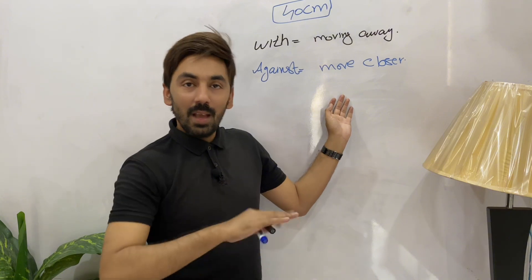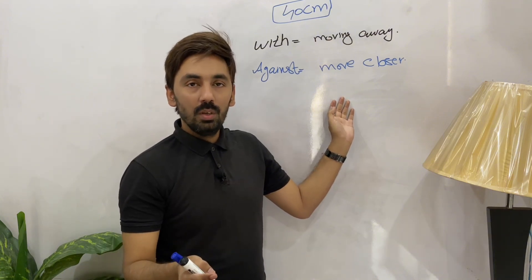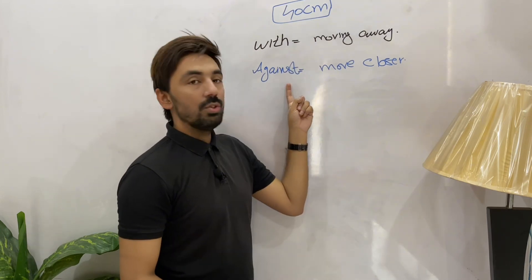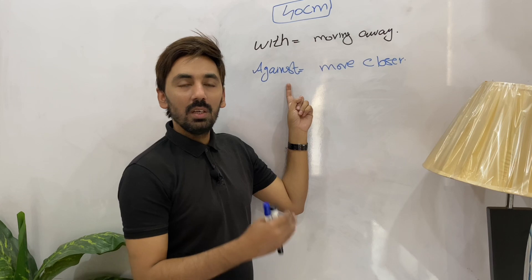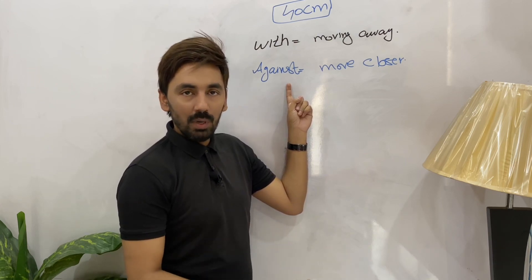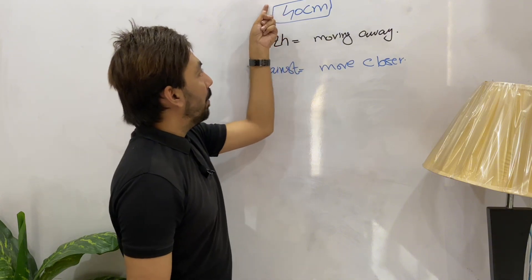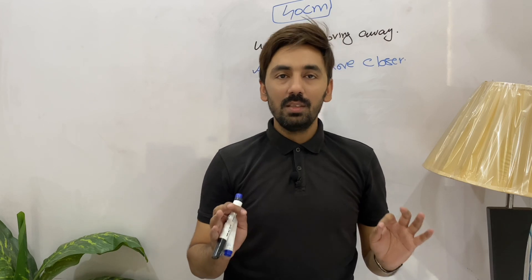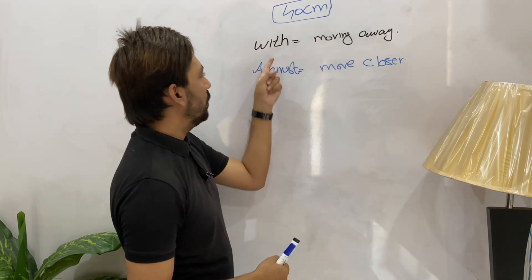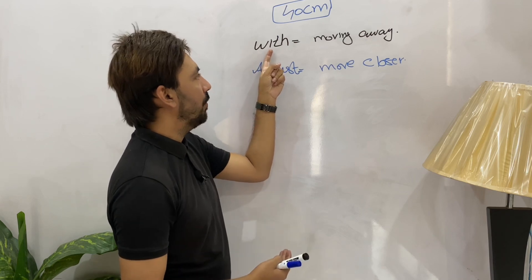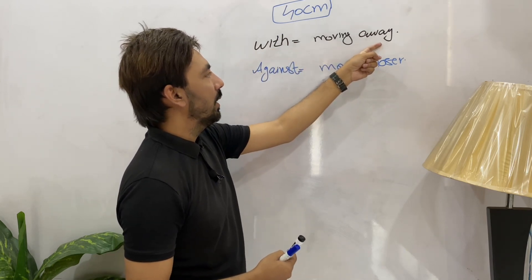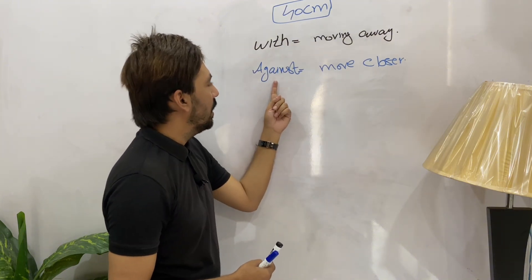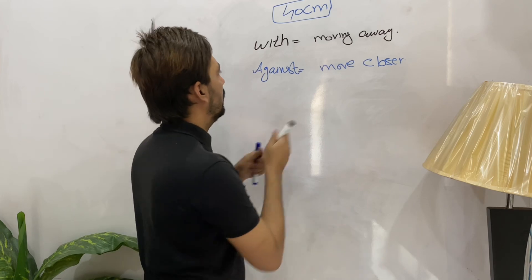In any other type of retinoscopy, we neutralize with movement using plus spherical lenses and against movement using minus spherical lenses. But in nott retinoscopy, we are not going to use any spherical lenses. We will now prove why we move closer when we observe against movement and why we move away from the patient when we observe with movement.